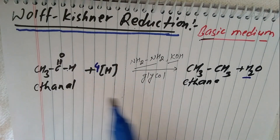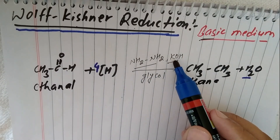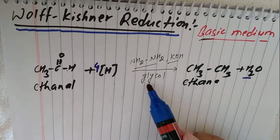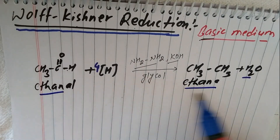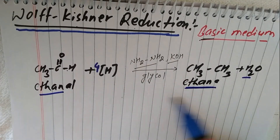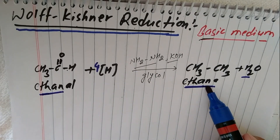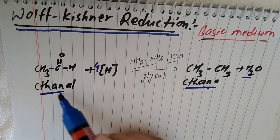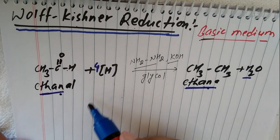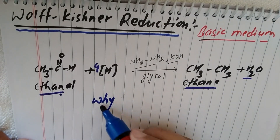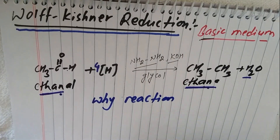Total hydrogen added is two plus two, which is four. So ethanal, when heated with NH₂NH₂ (hydrazine) in basic medium with KOH and solvent glycol, gives the equal number of carbon alkane — that is, ethanal to ethane, acetaldehyde to ethane. We can remember this reaction by the 'WHY' mnemonic.